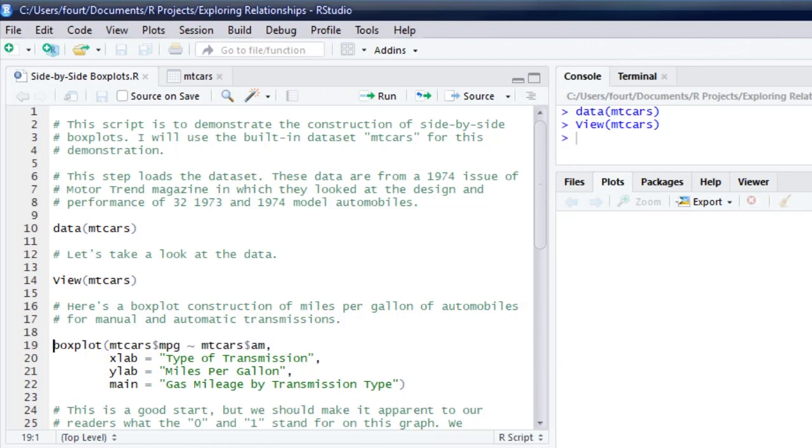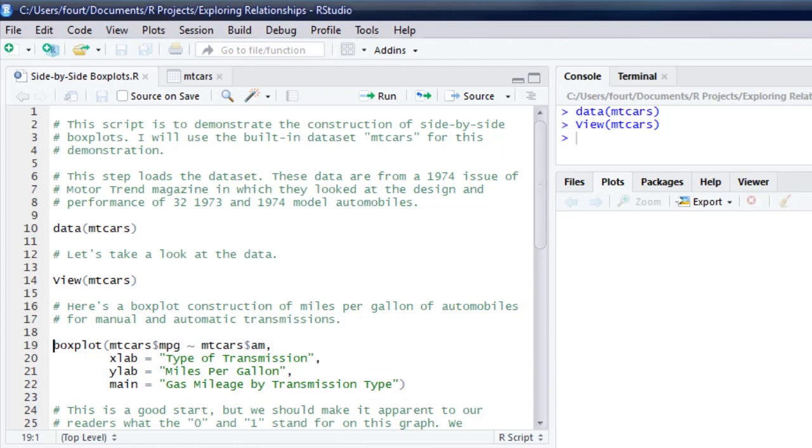We can read this first parameter as MPG as a function of transmission type. In other words, we want the box plot to show us the distribution of MPG, but we want to do it as a function of, or separately for, transmission type. The other three parameters are familiar. I labeled the horizontal and vertical axes, and I added a title to the graph. When we run this, we get side-by-side box plots.